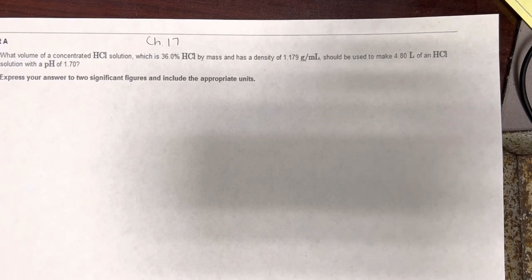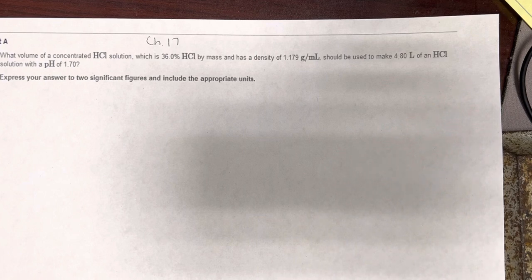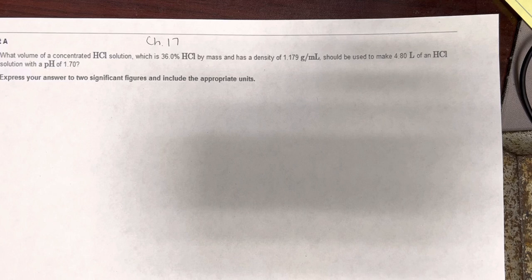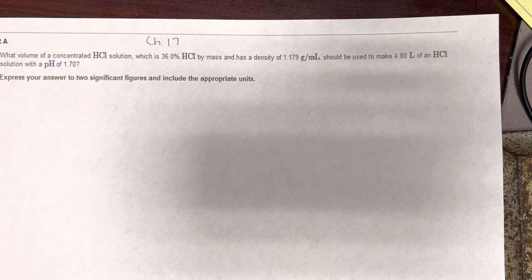We're given a concentration that's 36% HCl by mass. We're given a density of the solution. We're given a volume that we need to make, and we want our solution to have a pH of 1.7.